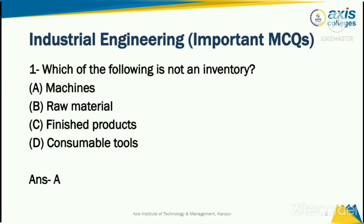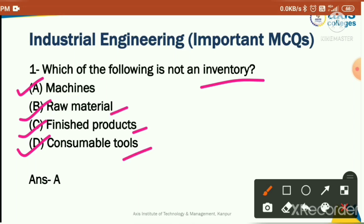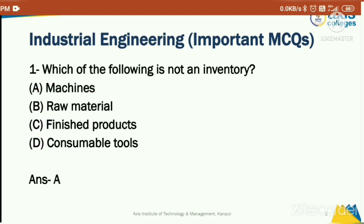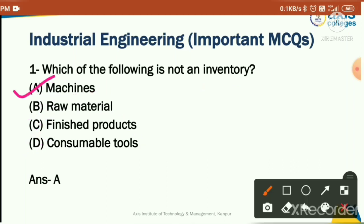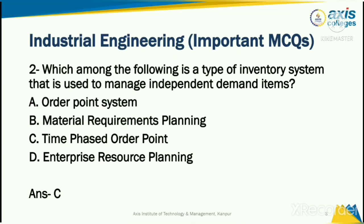The first question is: which of the following is not an inventory? Inventory is where you store and keep items together in one place. The options are: machines, raw materials, finished products, and consumable tools. Raw materials, finished products, and consumable tools can be stored, but machines cannot be stored in inventory. Hence the correct answer is option A: machines.